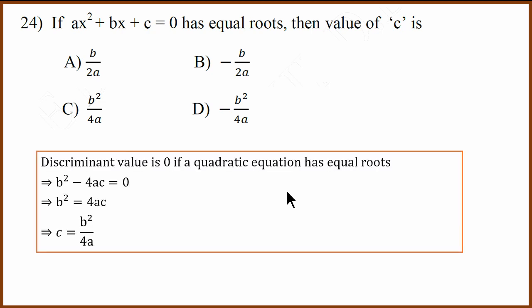24th question, equal roots question. When roots are equal, we know the discriminant is 0. Discriminant is b square minus 4ac equals 0, which means b square equals 4ac, which means c equals b square by 4a. So it is c.